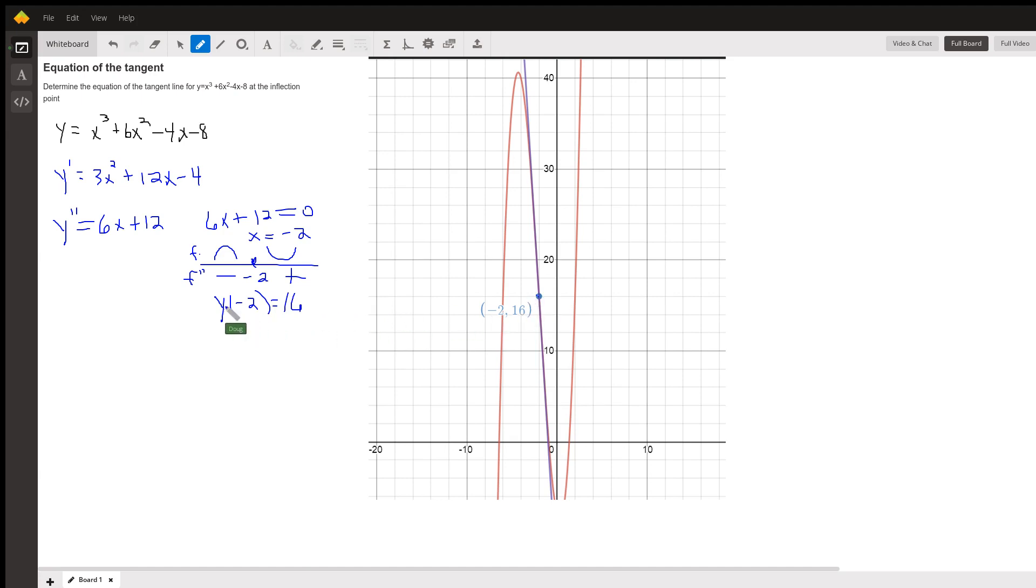Now, to write the equation of the tangent line at that point, we need to know what the slope is. We've got a point that it passes through. So we want to find y prime of negative 2, which means put negative 2 into the derivative. And that's going to be, well, 4 times 3 is 12, negative 2 times 12 is negative 24 minus 4. It looks like that's a minus 16.